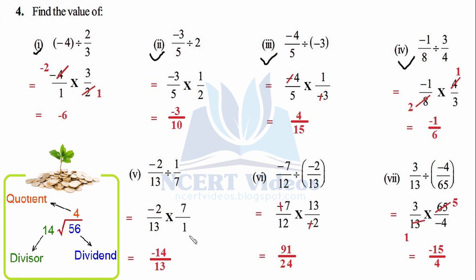Fifth part: −2/13 ÷ 7. Flip 7/1 to 1/7. Multiply: 7 × 2 = 14; minus × plus = minus; denominator 13 × 1 = 13. Answer: −14/13. Sixth part: flip the divisor to get 13/(−2). The minus signs cancel. 13 × 7 = 91 (verify: 7 × 3 = 21, carry 2; 7 × 1 + 2 = 9, so 91). Denominator: 12 × 2 = 24. Answer: 91/24.